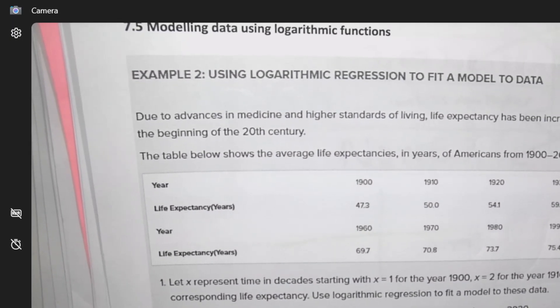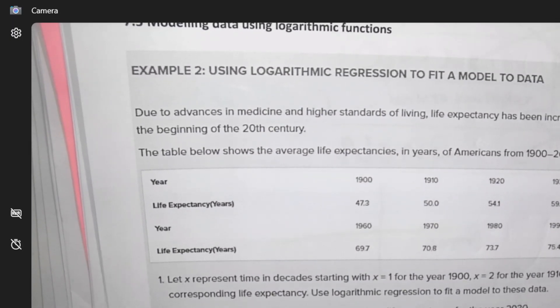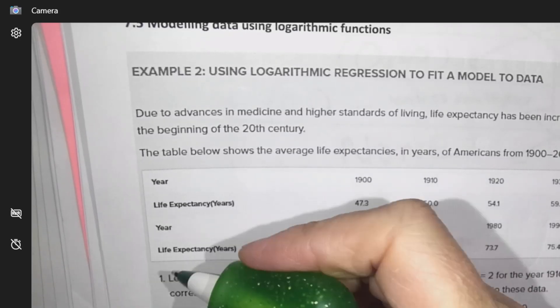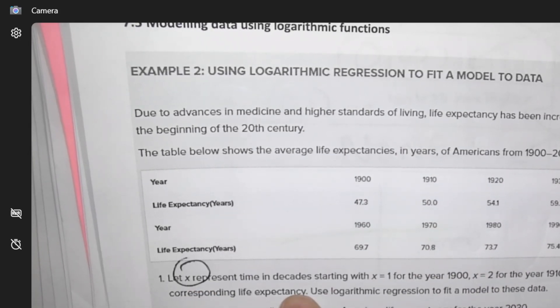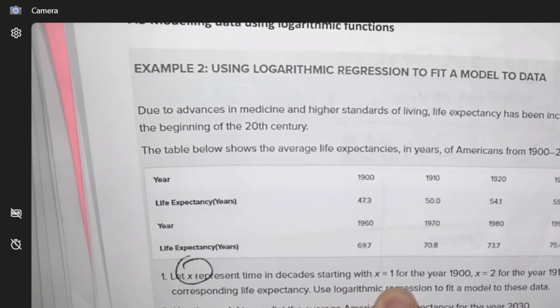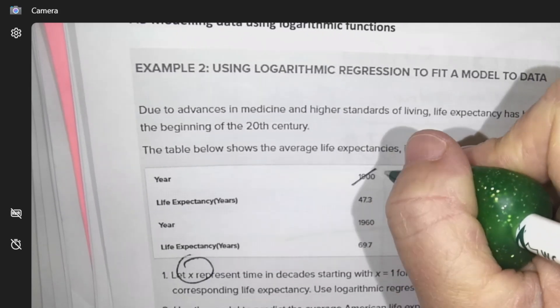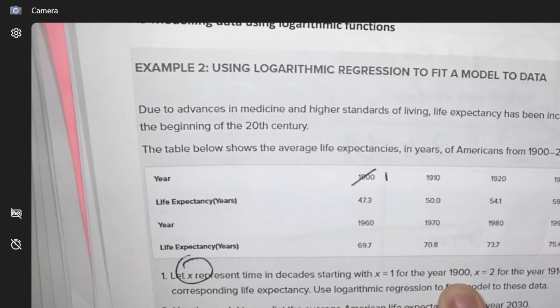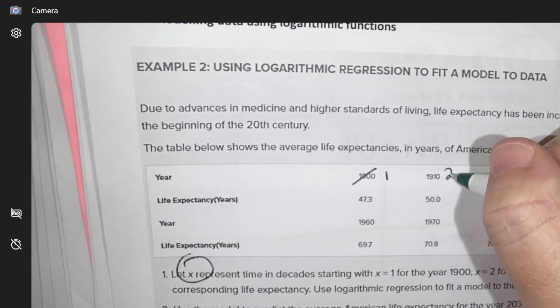Okay, so on this question, it's going to be a stat edit because we have a bunch of info, and x is the time in decades, and it says that we're going to start at the x value of 1 for 1900. So 1900 is going to be a 1, 1910 is going to be a 2.